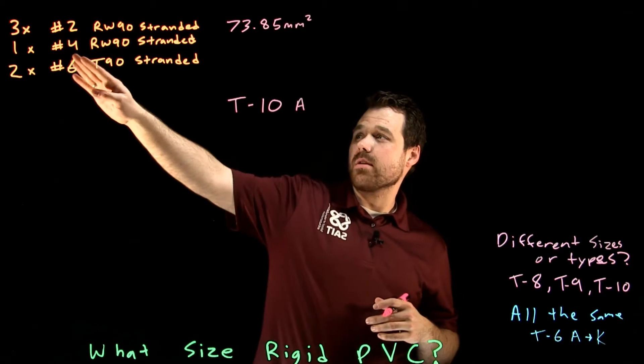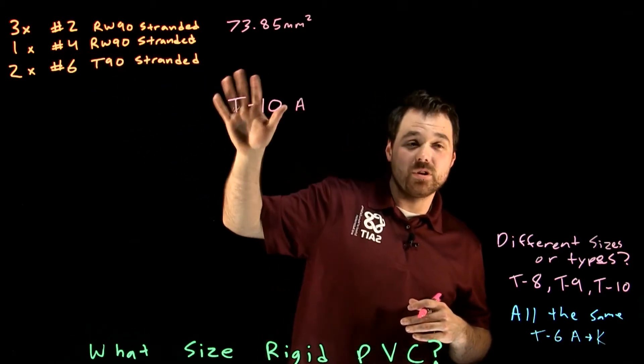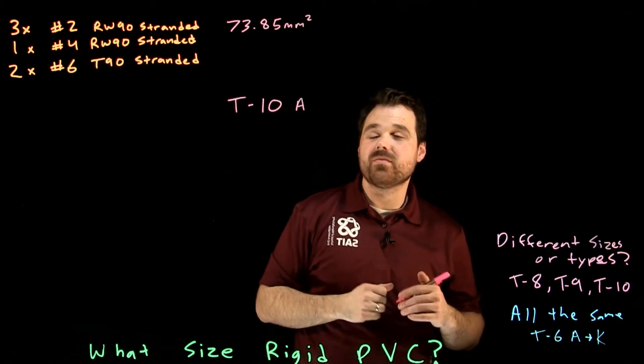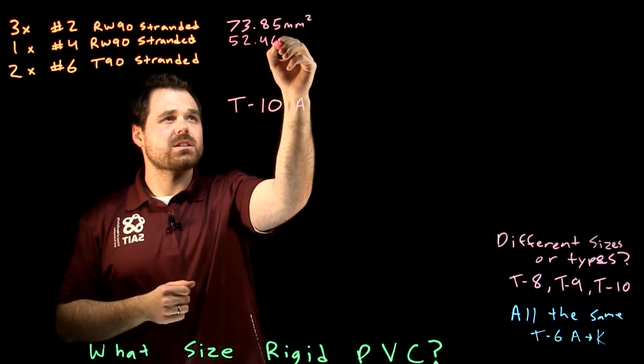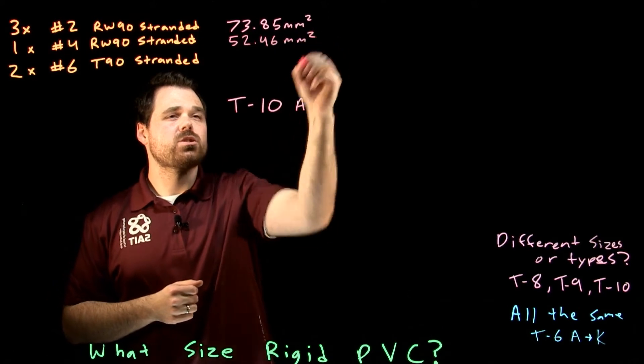It also tells us that our number four RW90, and we're looking for the area. The area of one number four is fifty two point four six millimeters square.